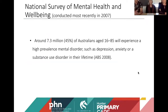In terms of overall prevalence for comorbidity, around 45% of Australians — almost half — will experience a high-prevalence mental disorder such as depression, anxiety or a substance use disorder in their lifetime. So we're talking about half of Australians in their lifetime experiencing at least one of these problems.